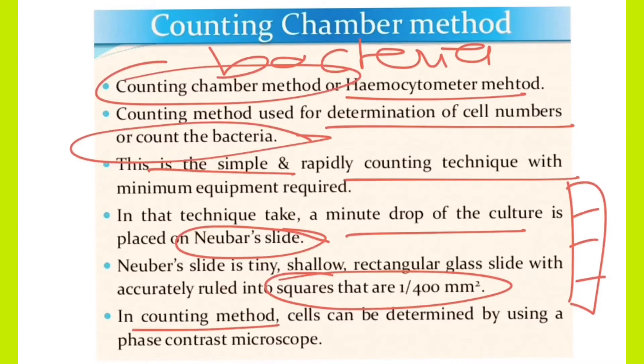In this counting method, cells can be determined by using phase contrast microscope. When you put the cultures or bacteria inside, these slides are observed under the phase contrast microscope.